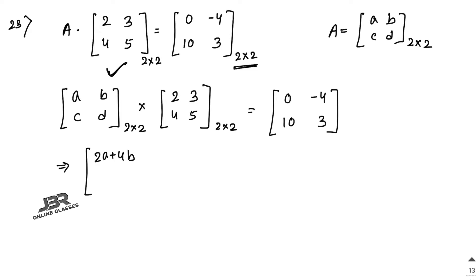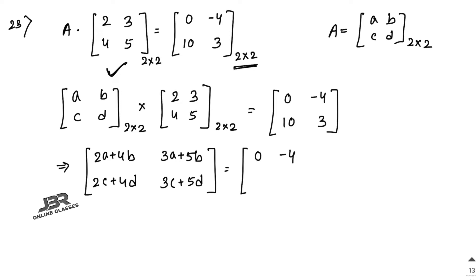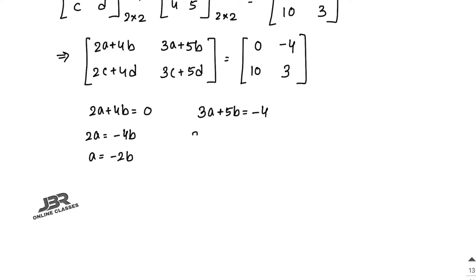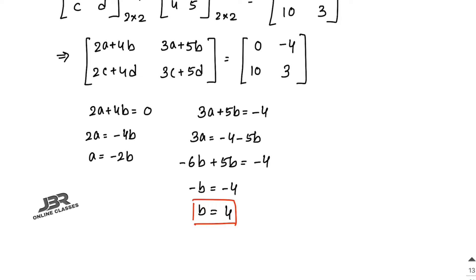Multiplying out: [2a+4b, 3a+5b; 2c+4d, 3c+5d] equals [0,-4; 10,3]. Comparing both sides: 2a+4b equals 0, so a equals minus 2b. Then 3a+5b equals minus 4; substituting a equals minus 2b gives minus 6b+5b equals minus 4, so minus b equals minus 4, giving b equals 4.